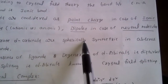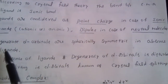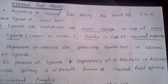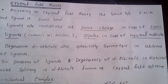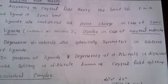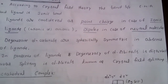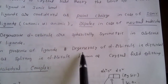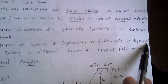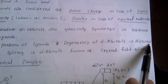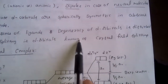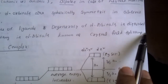Degenerate d-orbitals are spherically symmetric in the absence of ligands. If ligands are absent, all the d-orbitals in the central metal atom have equal energy — known as degenerate d-orbitals. In the presence of ligands, the degeneracy of d-orbitals is disturbed, meaning their energy changes and causes splitting in d-orbitals. This is known as crystal field splitting.